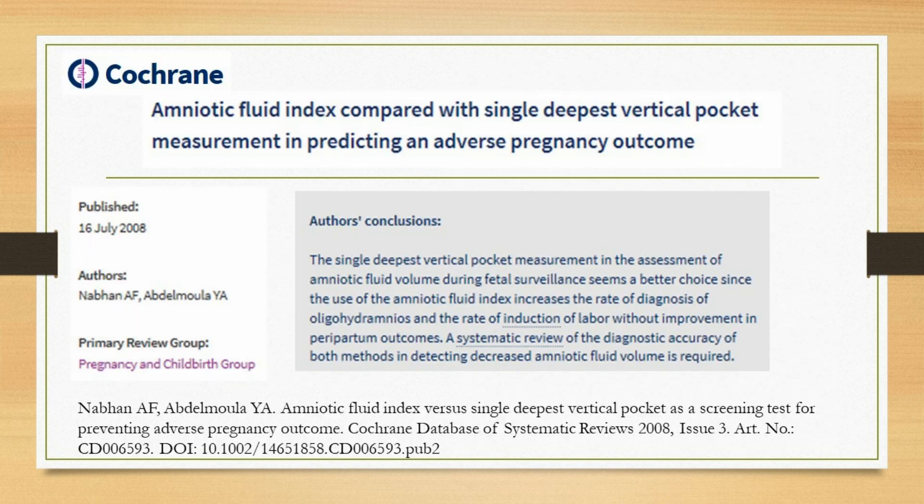There are various studies comparing the amniotic fluid index with the single deepest vertical pocket measurement. In an article by Nabhan et al., the authors conclude that the single deepest vertical pocket method in the assessment of amniotic fluid volume during fetal surveillance seems to be a better choice, since the use of the amniotic fluid index increases the rate of diagnosis of oligohydramnios and the rate of induction of labor without improvement in peripartum outcomes. A systematic review of the diagnostic accuracy of both methods in detecting decreased amniotic fluid volume is required.